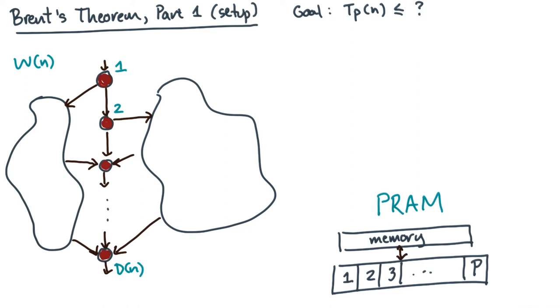Let's imagine we're doing some forensic analysis, and we go back and look at the execution of the DAG on the PRAM. Let's break up that execution into phases, where each phase satisfies three conditions.